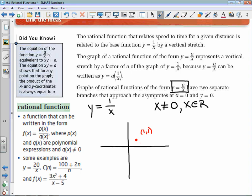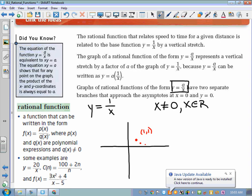So when x is 2, we'd have 1 half. When x is 3, we'd have 1 third. You know, when x is 10, we'd have 1 tenth. And what happens to this graph as x becomes very large is the value of y actually approaches 0.